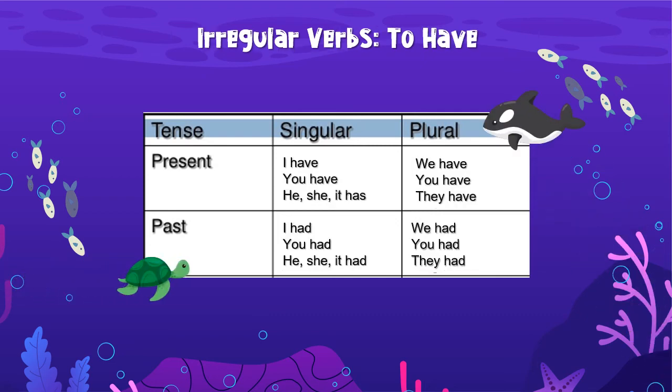Now let's look at the irregular verb 'to have.' Present tense singular: I have, you have, but he, she, it — has. Plural: we have, you have, they have. The only subject that gets 'has' is he, she, and it in the present tense. In the past tense, it doesn't matter if it's singular or plural — it's all 'had': I had, you had, he/she/it had, we had, you had, they had. So the only forms 'have' conjugates into are 'have,' 'has,' and 'had.'